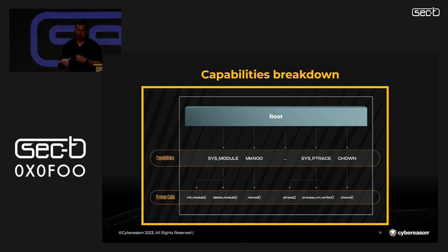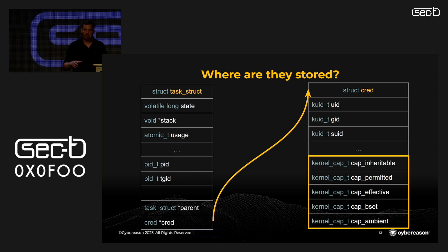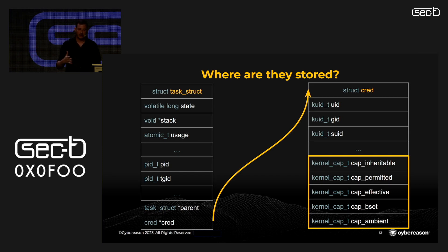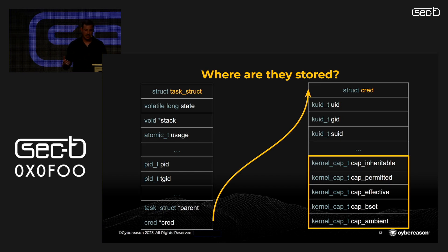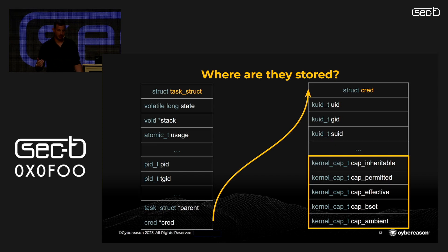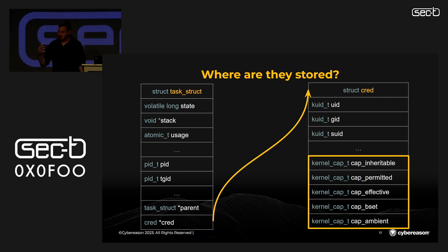Capabilities enable the breakdown of the dichotomy between root and non-root privileges. When a process is created, it dynamically allocates a task structure containing all the information to manage a process, such as process ID, its stack, and a pointer to a parent process. The most interesting part for our talk is the cred structure at the bottom, which holds the security context — the UID, GID, SUID, and lastly the five capability sets.